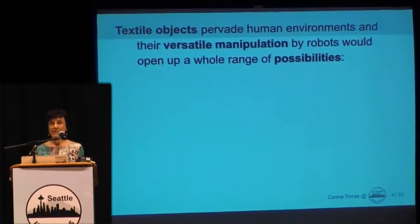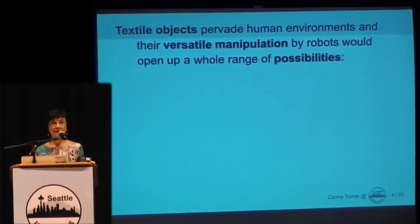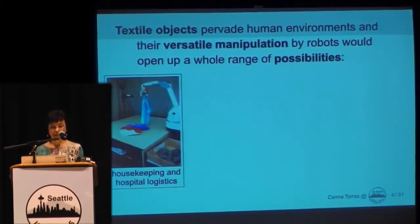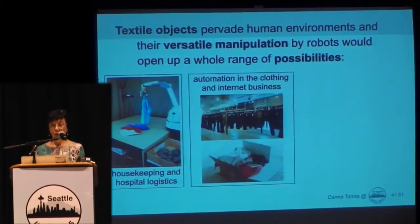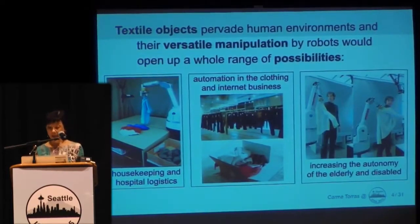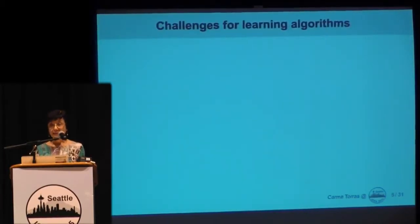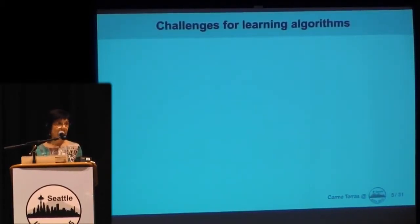Entering the subject of my talk, textile objects are all around us in human environments, and their versatile manipulation would open up many possibilities, from housekeeping and hospital logistics, to automation in the clothing and internet business, to helping the elderly and disabled to be more autonomous. This, however, poses many challenges, because it's very much harder to manipulate and perceive deformable objects than rigid objects.